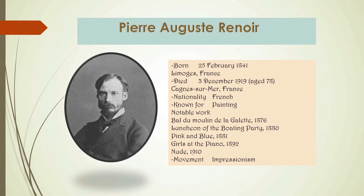In 1862, he began studying art under Charles Gleyre in Paris, where he met Alfred Sisley, Frédéric Bazille, and Claude Monet. Together they painted in the Impressionist style — snapshots of real life, full of sparkling color and light. By using small, multicolored strokes, Renoir evoked the vibration of the atmosphere.